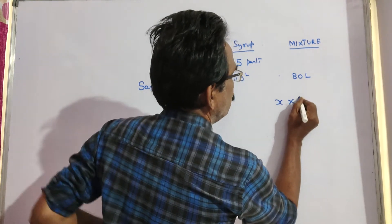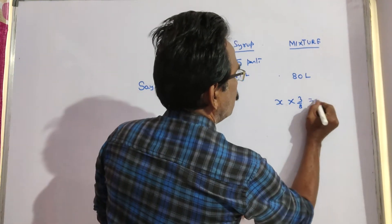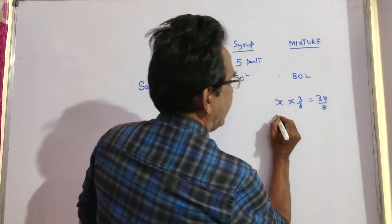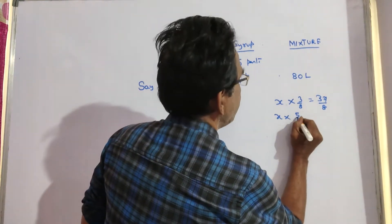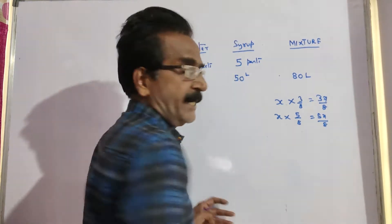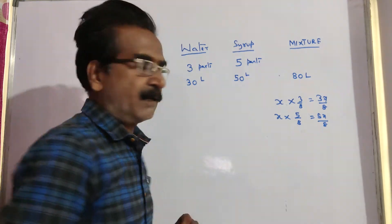x liters into 3 by 8 that is equal to 3x by 8. 3x by 8 liters of water is drawn and x into 5 by 8 that is 5x by 8 liters of syrup is drawn.